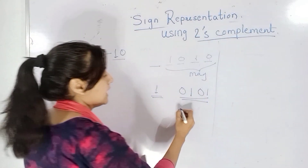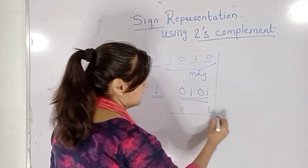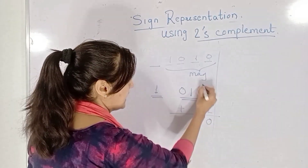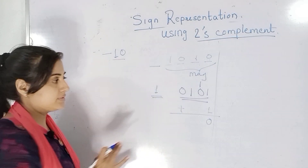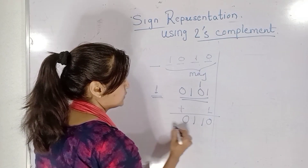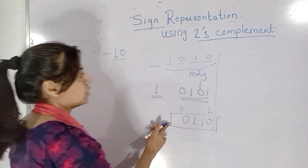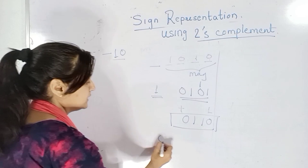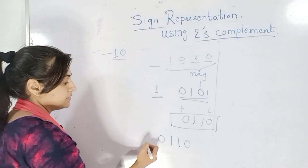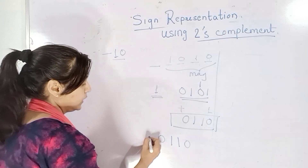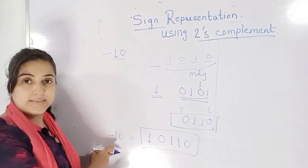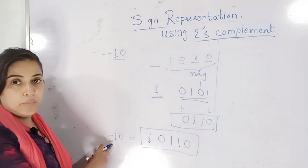The second step is to add 1 to this complemented form. So 1 plus 1 is 0 with carry 1, following binary addition rules. So 1 plus 0 is 1, and the remaining bits are 1 and 0. This gives us the 2's complement: 0110. The last step is that the MSB will be 1 because the number is negative. So this is the representation of minus 10 in 2's complement form.